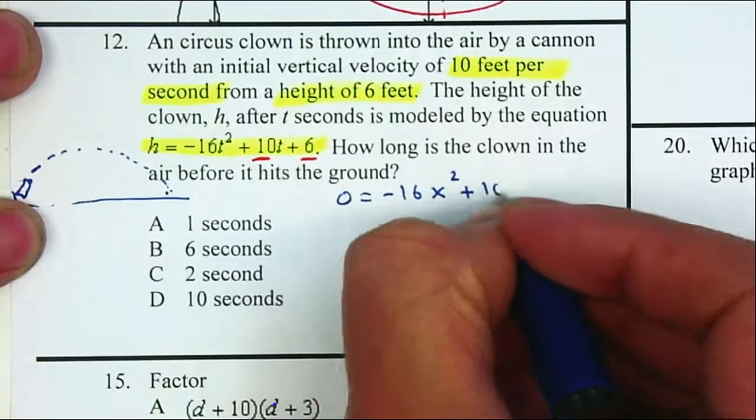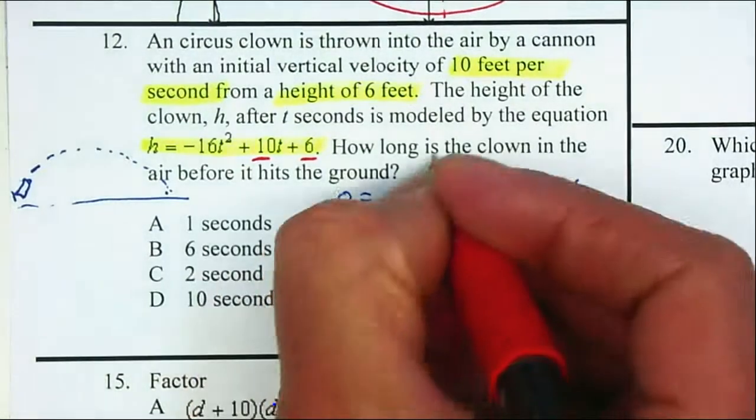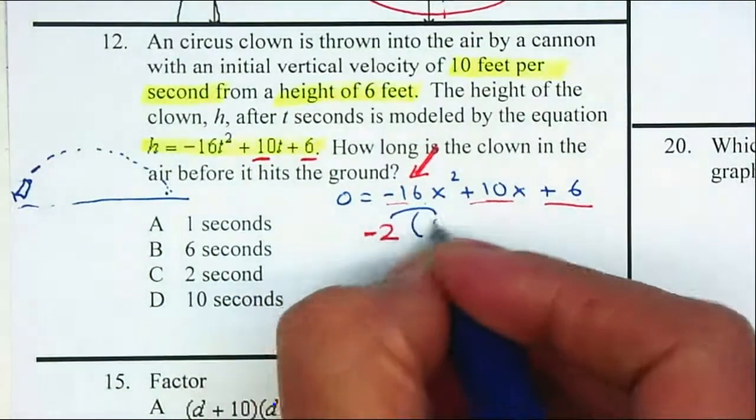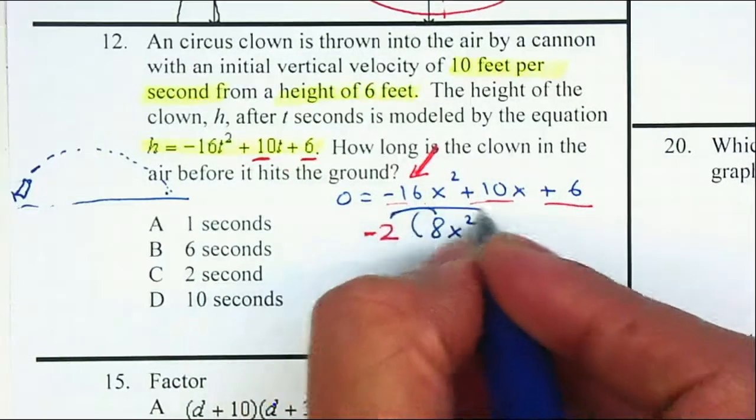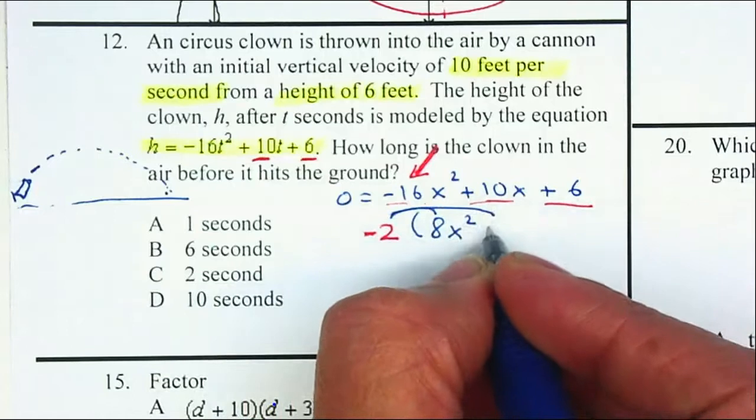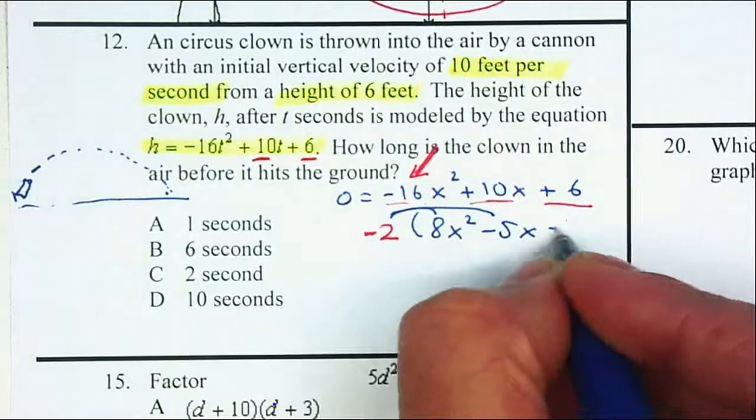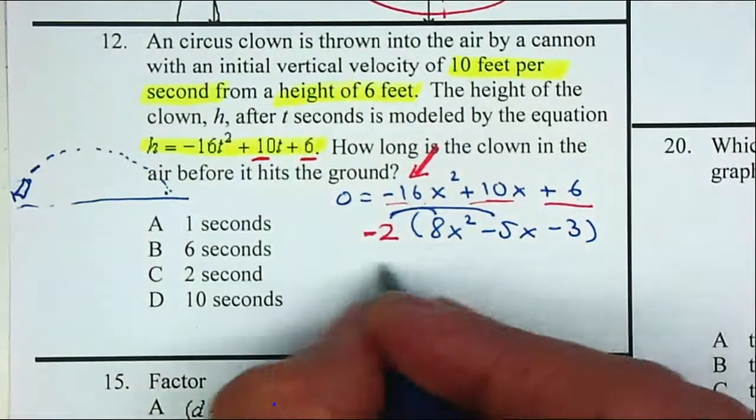Now I just want to factor it. One number divides 16, 10, and 6: 2. Remember, if the first number is negative, you want to take out a negative 2. Do they all have an x? No. So what's left behind: -2 times 8x² gives you -16x². -2 multiply by -5x gives me a positive 10x. -2 times -3 gives you 6.